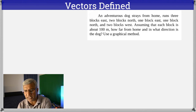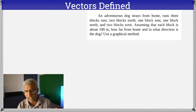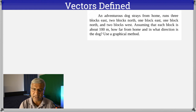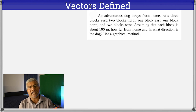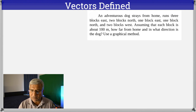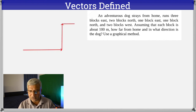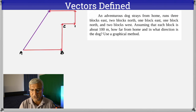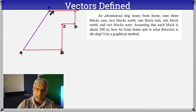Here's an example using the graphical method. An adventurous dog strays from home, runs 3 blocks east, 2 blocks north, 1 block east, 1 block north, and 2 blocks west. Each block is about 100 meters. We need to find how far from home and in what direction the dog is. The actual paths are the dashed curves A→B→C→D→E→F, and the resultant is the vector from A to F. We need to find AF graphically.